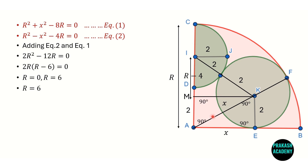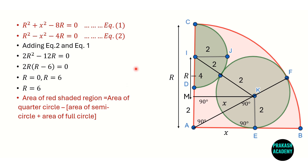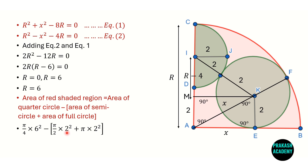Now we find the area of the red shaded region: Area = Area of quarter circle − (Area of semi-circle + Area of full circle). Area of quarter circle = (π/4) × 6² = 9π. Area of semi-circle = (π/2) × 2² = 2π. Area of full circle = π × 2² = 4π. So the shaded area = 9π − (2π + 4π) = 9π − 6π = 3π.